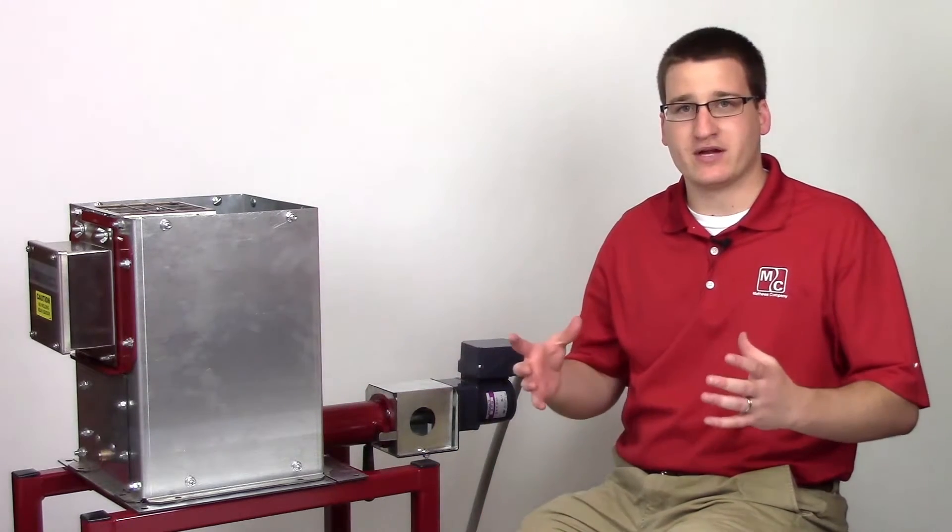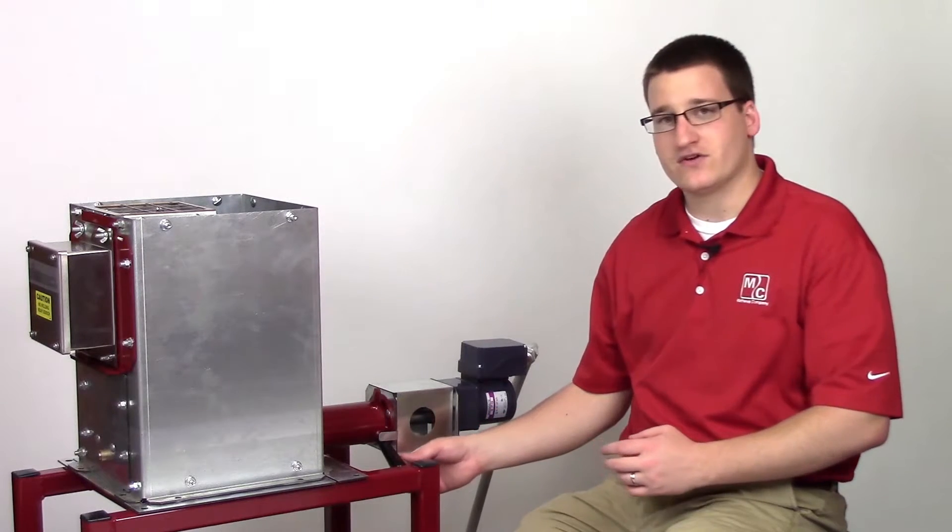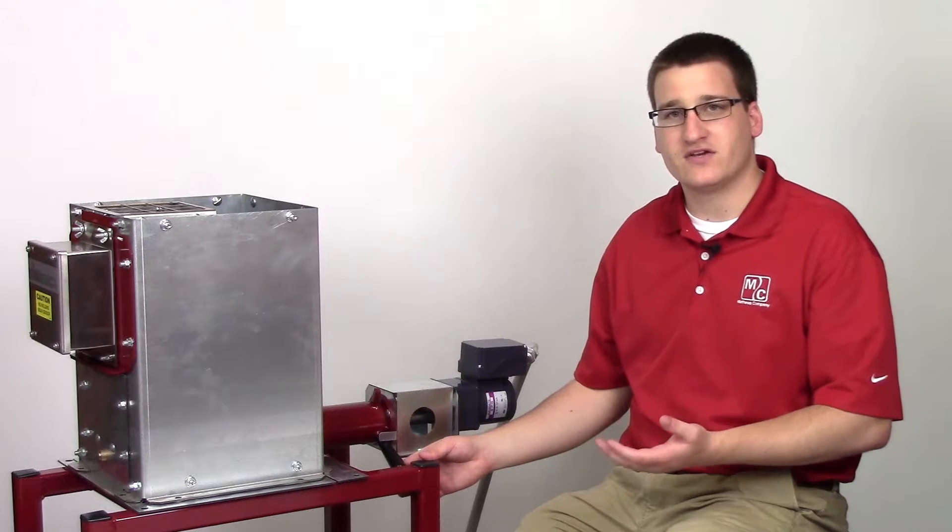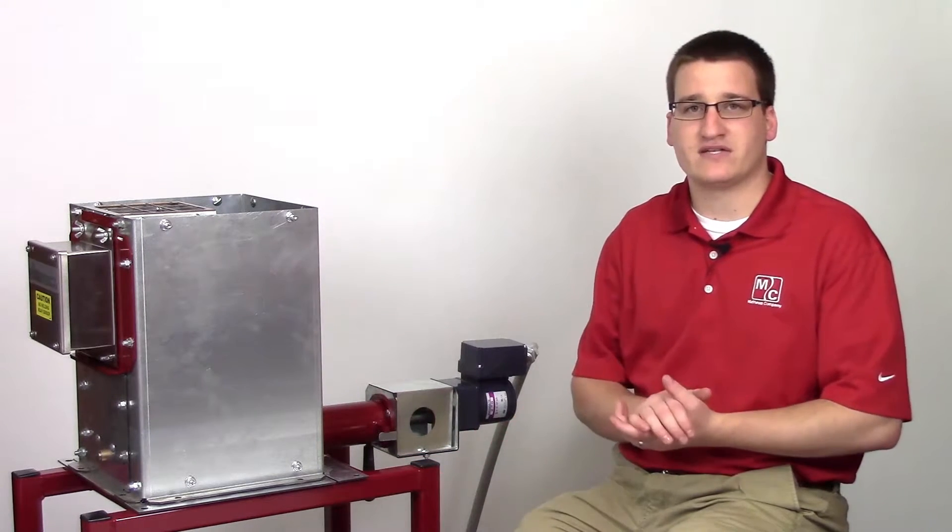In order to take a sample, you'll get a bucket and place it underneath your sampling auger. Turn the handle to let grain start to flow out until you have enough of your sample. You then close the handle and take the bucket to your tester.